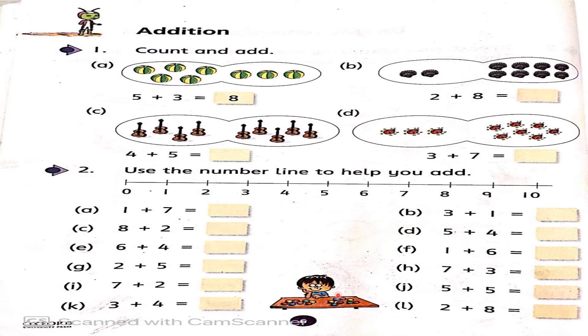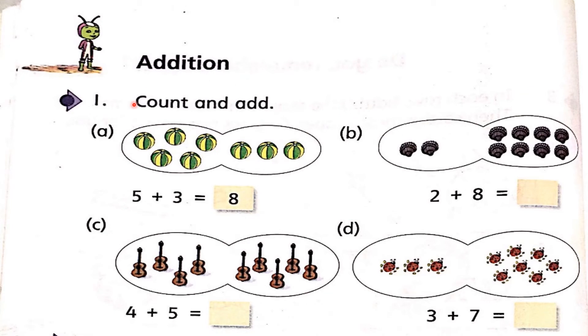Now, open book page number 6. Addition horizontally. First we will solve question number 1, A to D. Question 1, part A is already done. In B part, you can see 8 shells on my right hand side and 2 shells on my left hand side. 8 number is bigger. Start counting after 8: 9, 10. So, answer we get 10.